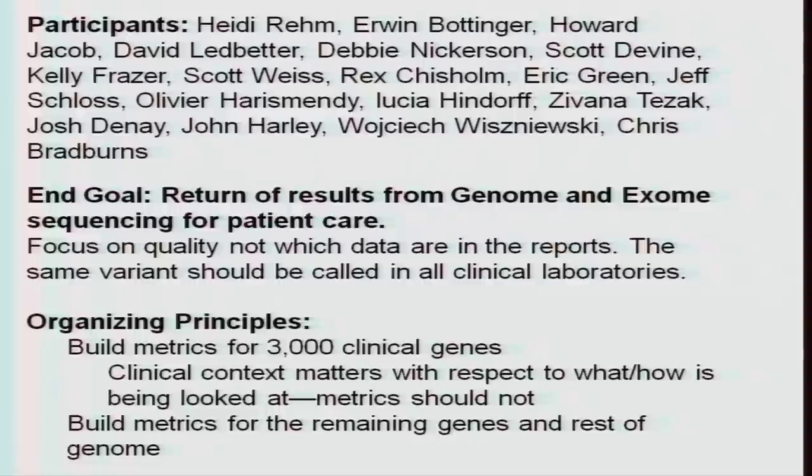Inside the clinical delivery side, context matters — how we look at it, what we're going to do with it, are variables. For example, depending on the disease, if it's monogenic or you think you know what the gene is, that's going to be a different way of looking at it than if you're doing whole genome sequencing and trying to come up with a derivative. Nonetheless, we need to build the metrics around that.